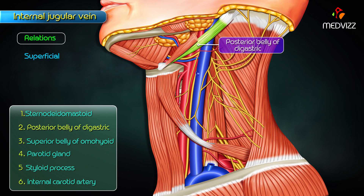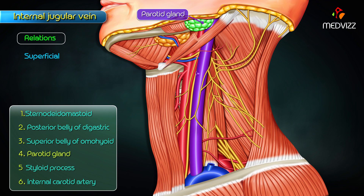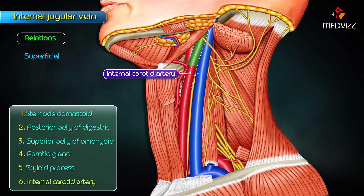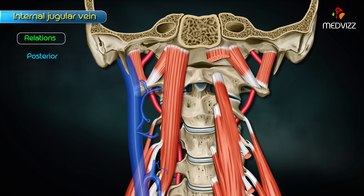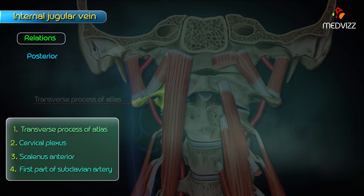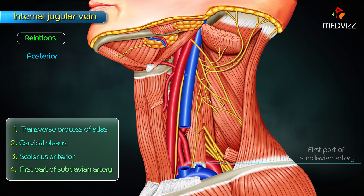The superficial relations are the sternocleidomastoid, posterior belly of digastric, superior belly of omohyoid, parotid gland, styloid process, and the internal carotid artery. The posterior relations are the transverse process of atlas, cervical plexus, scalenus anterior, and the first part of the subclavian artery.